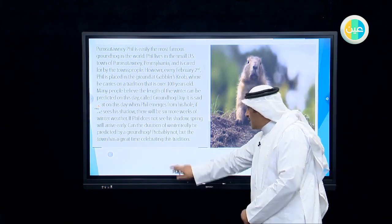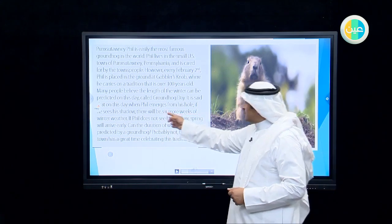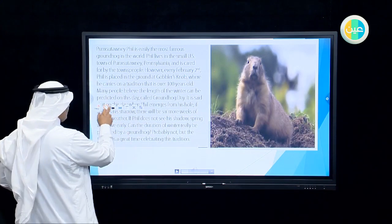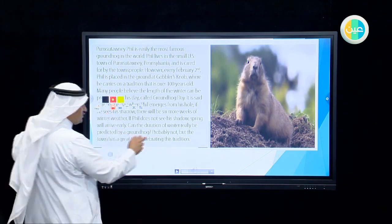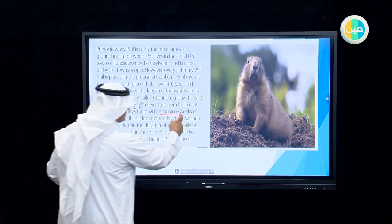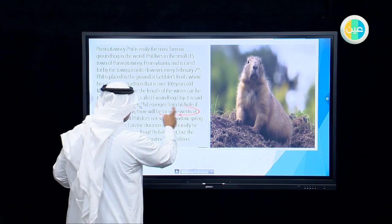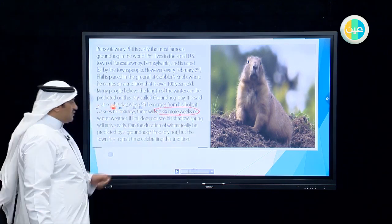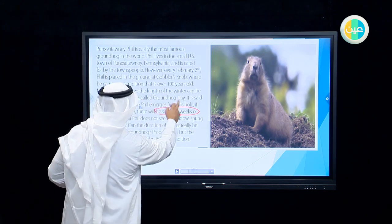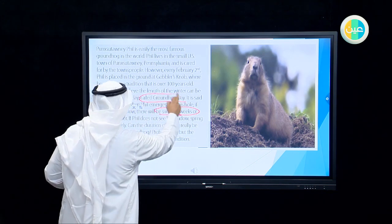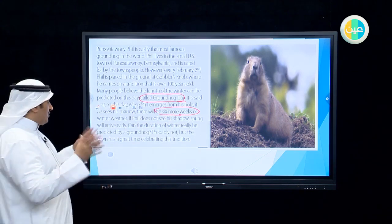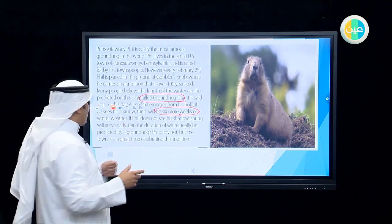Can the duration of winter really be predicted by a groundhog? Probably not. But the town has a great time celebrating this tradition. As you can see here, if he sees his shadow, there will be six weeks of winter. They have also dedicated a national day to celebrate this.